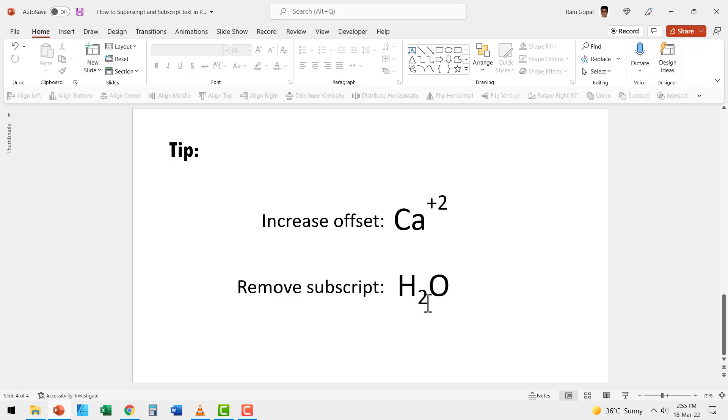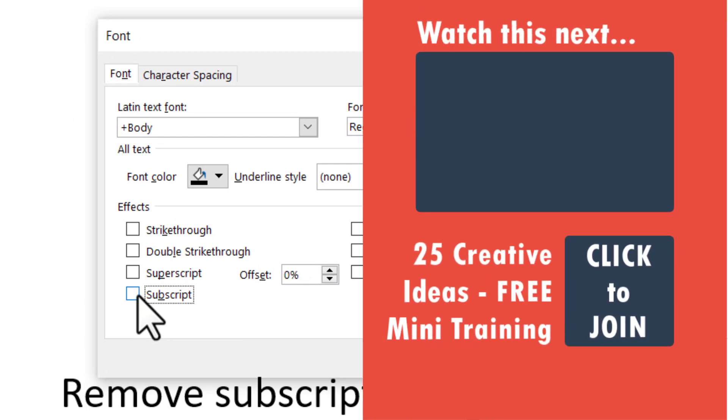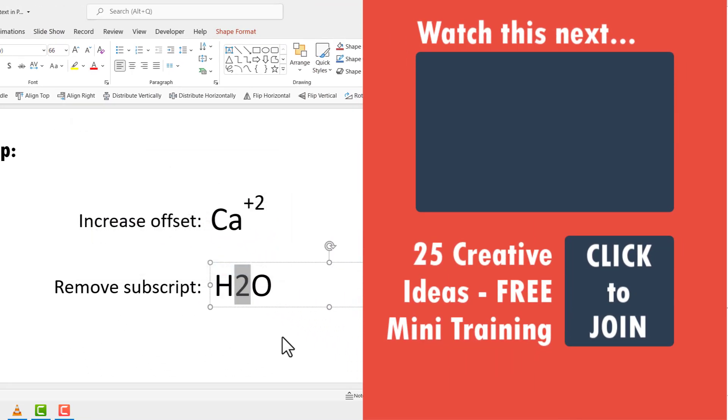The second tip is how do you remove a subscript and make it into normal text? Very simple. You select the subscript and then go to the same dialog box in the Font group. And then you uncheck the place where you have checked subscript and you say OK, now it gets converted into normal text.